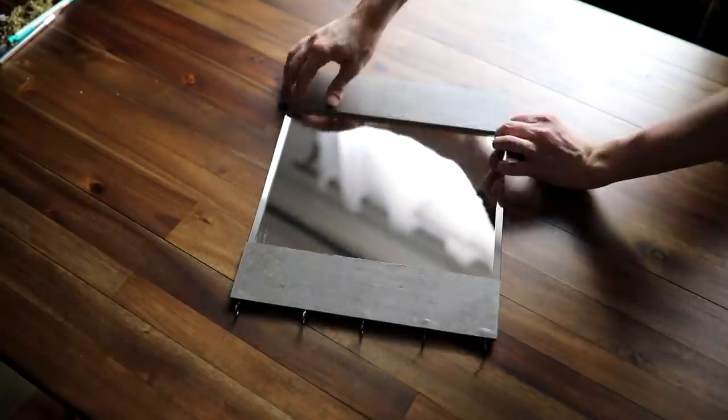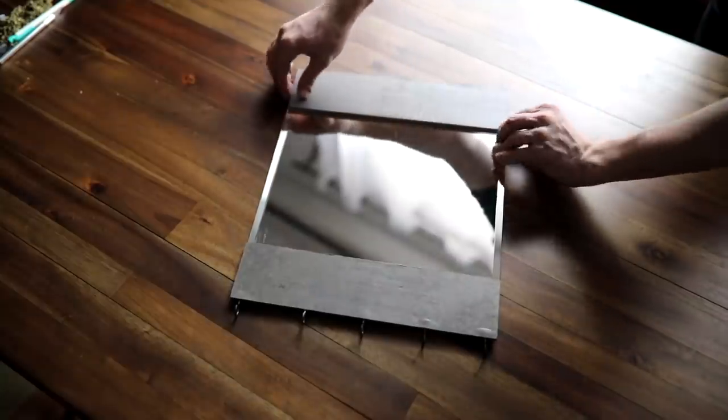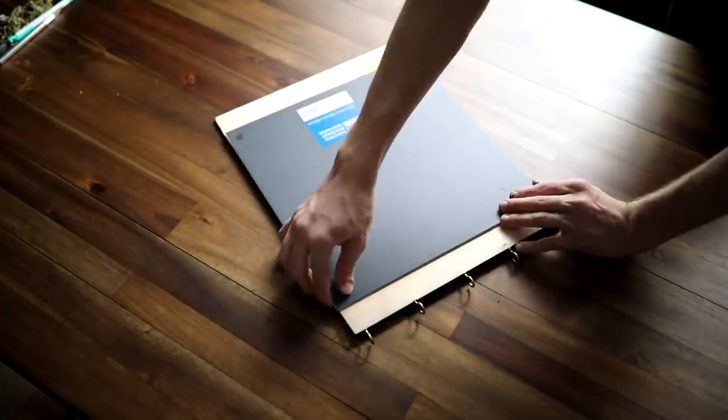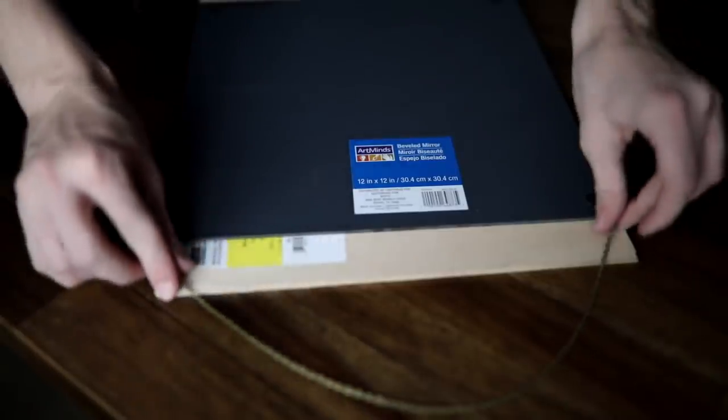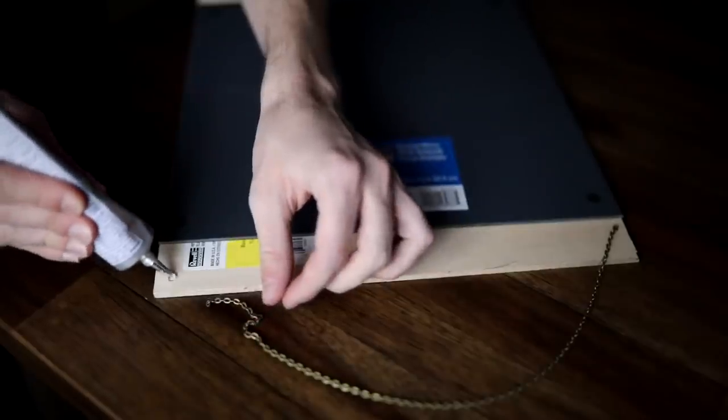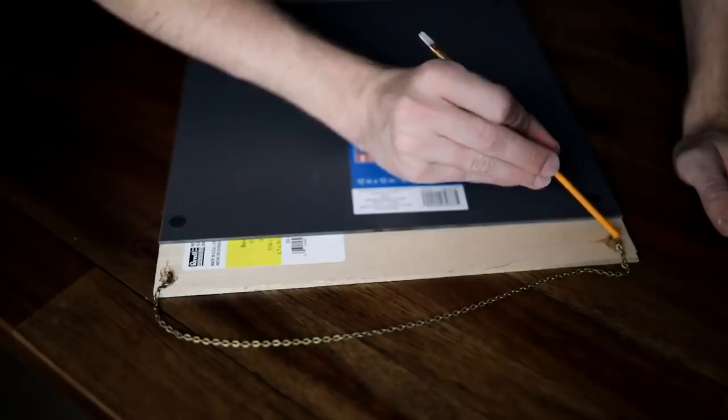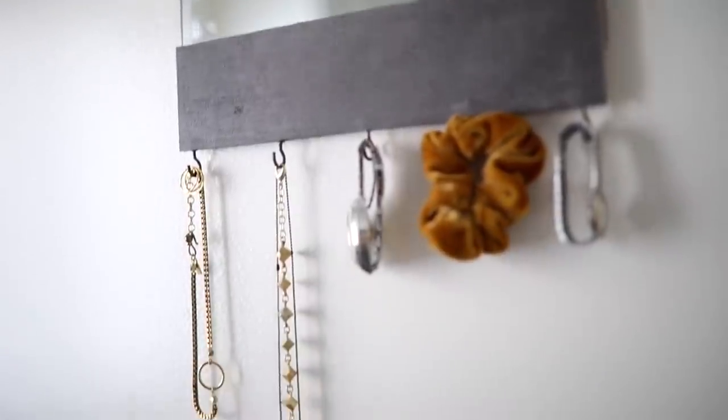Then I used my E6000 adhesive, which is super strong industrial cement, to adhere down both sides on top of the glass mirror. I let that sit overnight, then added on the chain using big globs of E6000. That finishes off your hanging mirror with jewelry holder.